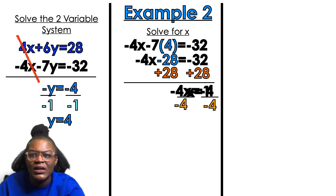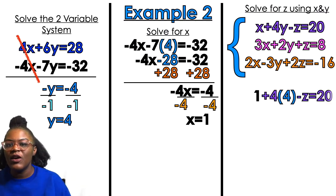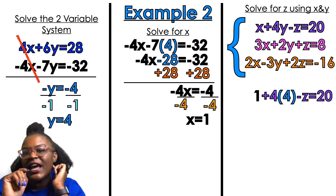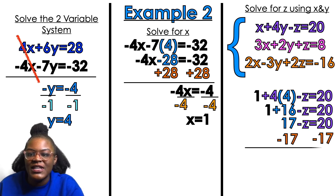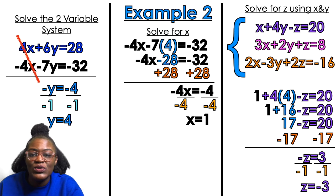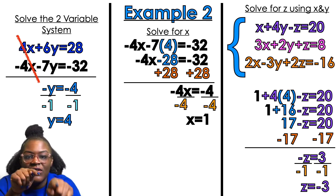Now I take the original system and plug in x equals 1 and y equals 4. Simplifying: 1 plus 16 equals 17. Subtracting 17 from both sides: negative z equals 3, so dividing by negative 1 gives z equals negative 3. Our solutions are x equals 1, y equals 4, z equals negative 3.